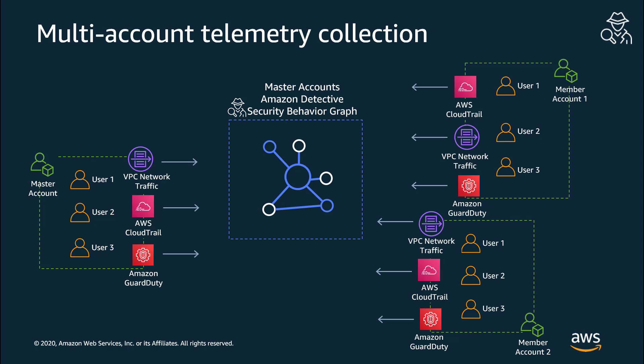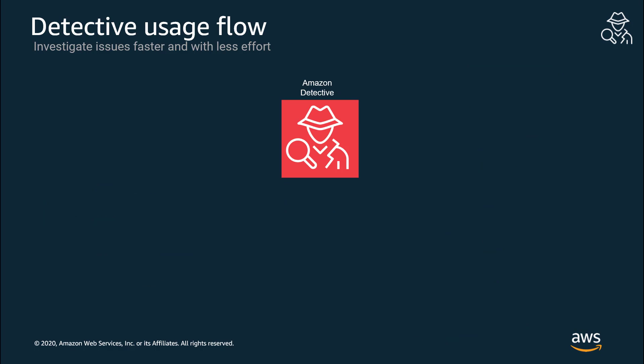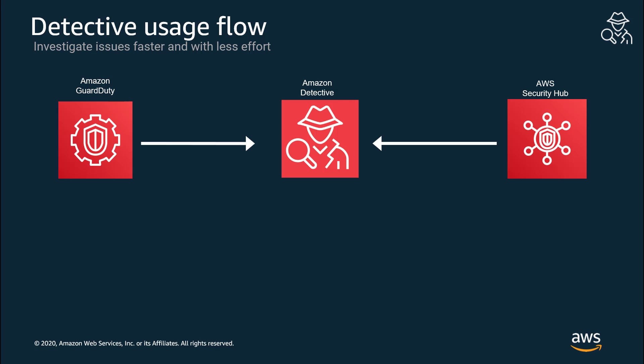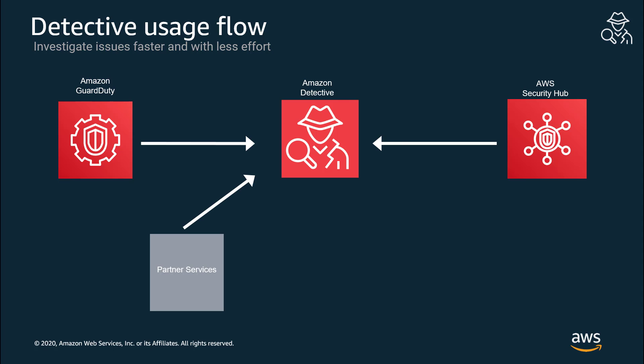The master account can interact with the security behavior graph using the Detective console. Many customers access the Detective console directly to get information on resources like users, roles, accounts, and EC2 instances, and to understand their security incidents and interactions with each other and with IP addresses and user agents. Other customers access Detective from either Amazon GuardDuty or AWS Security Hub to understand the details of a finding and to visualize the resources the finding might be associated with. Various third-party partners have integrated their service consoles with Detective as well.